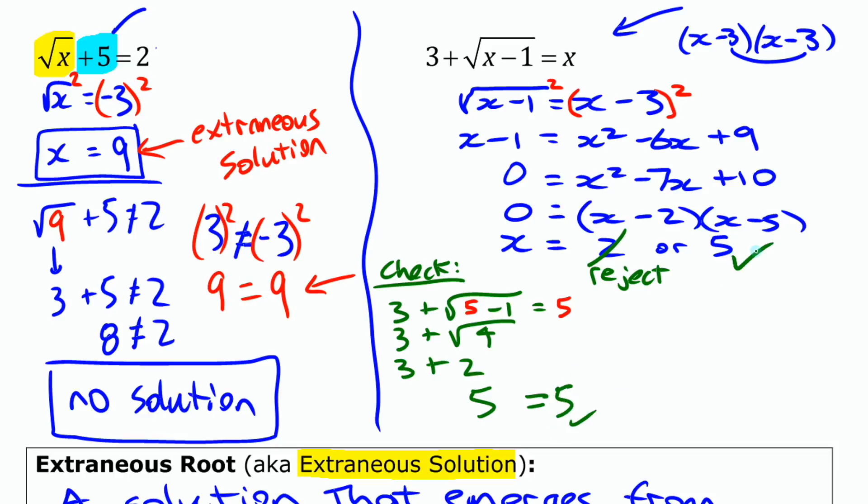That one's okay. The 2 needs to be rejected. So there's actually only one solution here, and that is x equals 5. Even though you get two solutions through the solving process, one of them has to be thrown away because it's an extraneous solution.